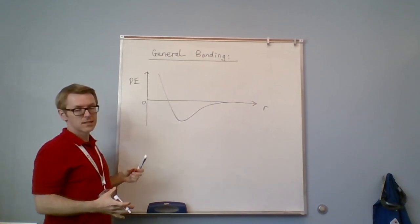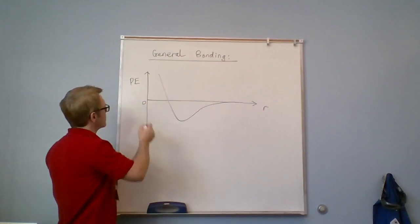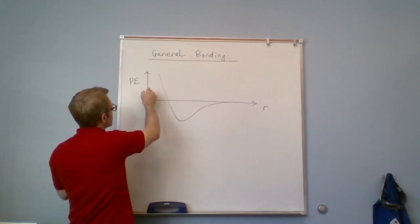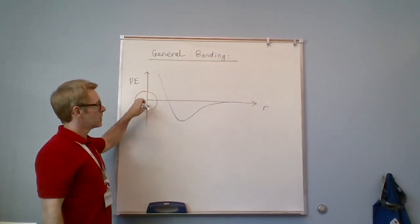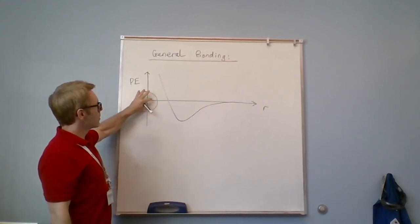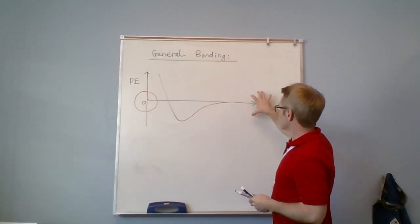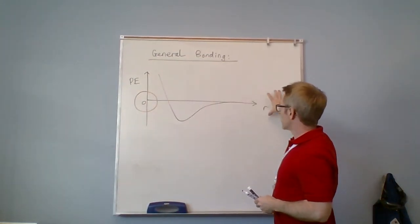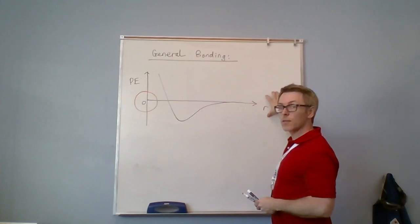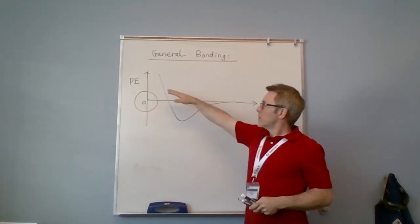So imagine we have two objects, and one of the objects is fixed at a distance zero from itself. Let's imagine we have an object here, it could be an atom or a molecule, it doesn't really matter, we'll keep it general. But we have an object here, we have another object over here that for now is infinitely far away and has no potential energy interaction with that object.